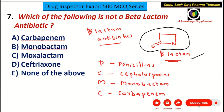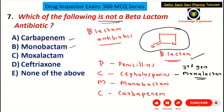Coming to the choices: carbapenem is a beta-lactam antibiotic. The question asks which is NOT a beta-lactam, so carbapenem is not the answer. Monobactam is a beta-lactam antibiotic. Moxalactam is a third generation cephalosporin — the word contains 'lactam,' meaning beta-lactam — so moxalactam belongs to cephalosporins and is also a beta-lactam antibiotic.